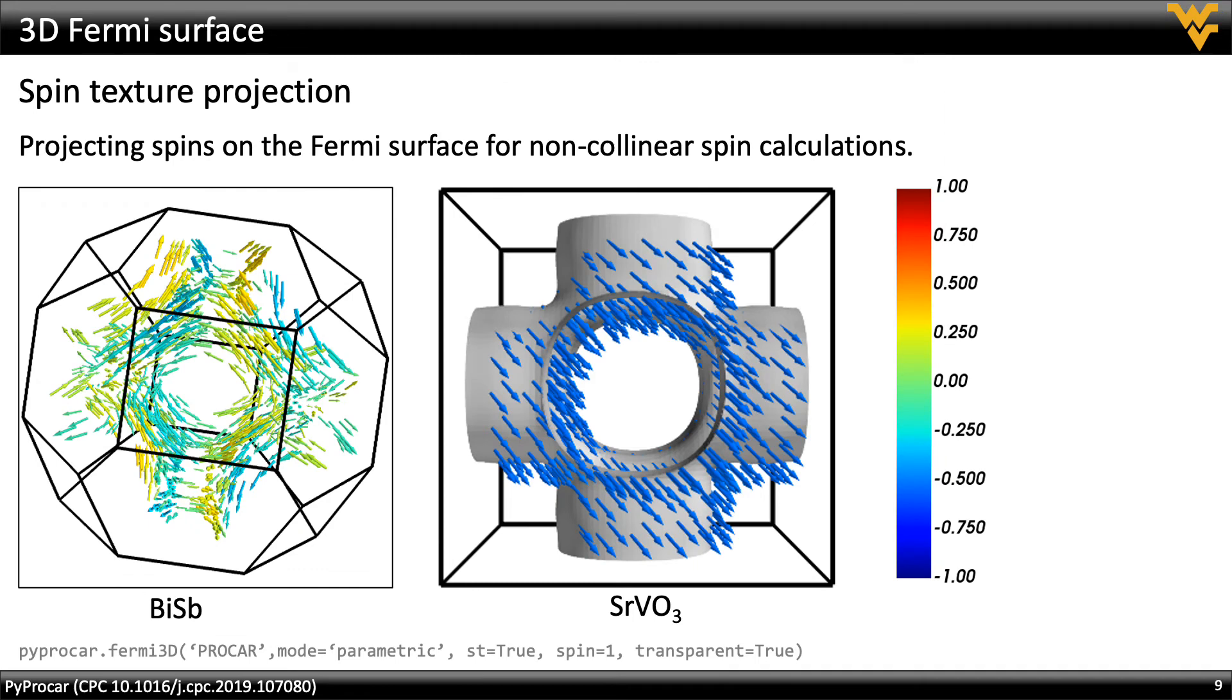Spin textures coming from non-collinear spin calculations can also be displayed on the Fermi surface as seen here for the materials bismuth antimony and strontium vanadate.